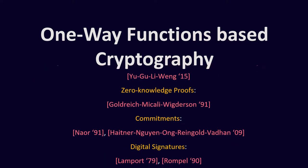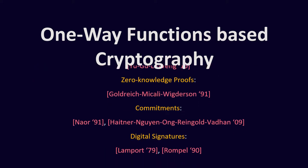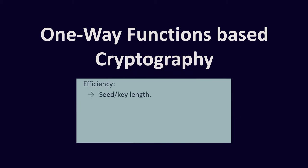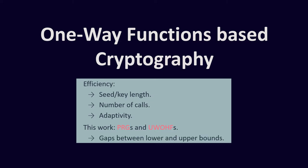For efficiency, we often want to consider the seed or key length, the number of calls to the one-way functions, and if we can, we want to make the calls to the one-way function non-adaptive. In this work, we are going to focus on PRG and universal one-way hash function constructions, for which there are gaps between the best lower and upper bounds.